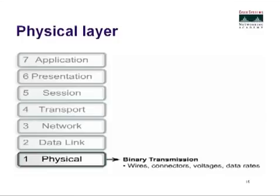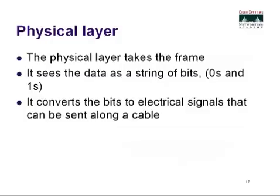Lastly, we have the physical layer, which has to do with cables, ones and zeros, and how we're transmitting data back and forth. The physical layer takes the frame, sees it as a string of bits — zeros and ones — and converts the bits to electrical signals that can be sent along a cable. If we were using fiber optics, it would convert them to light signals instead. The physical layer sends our ones and zeros across whatever network media we're using.